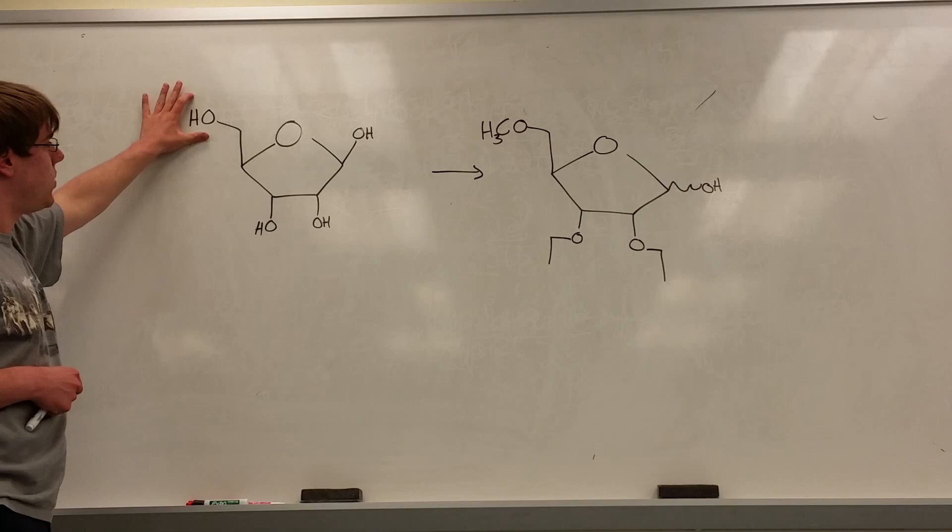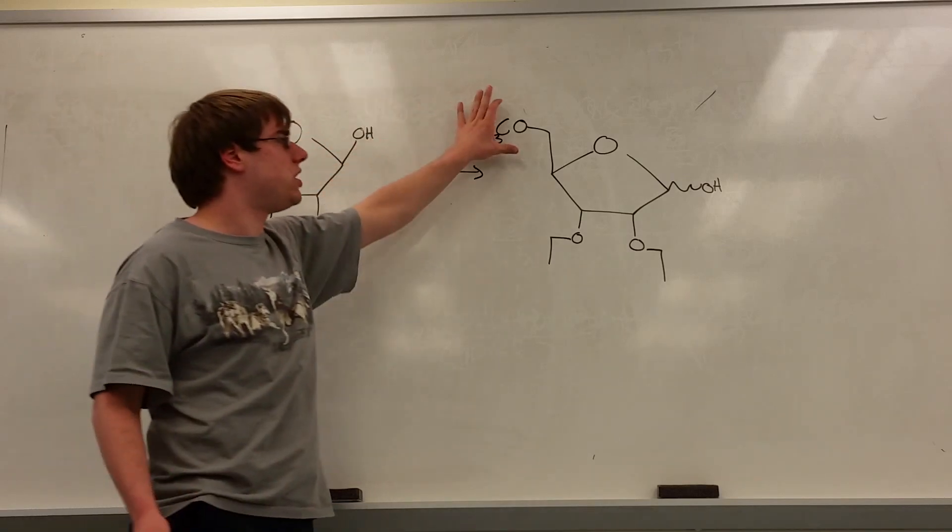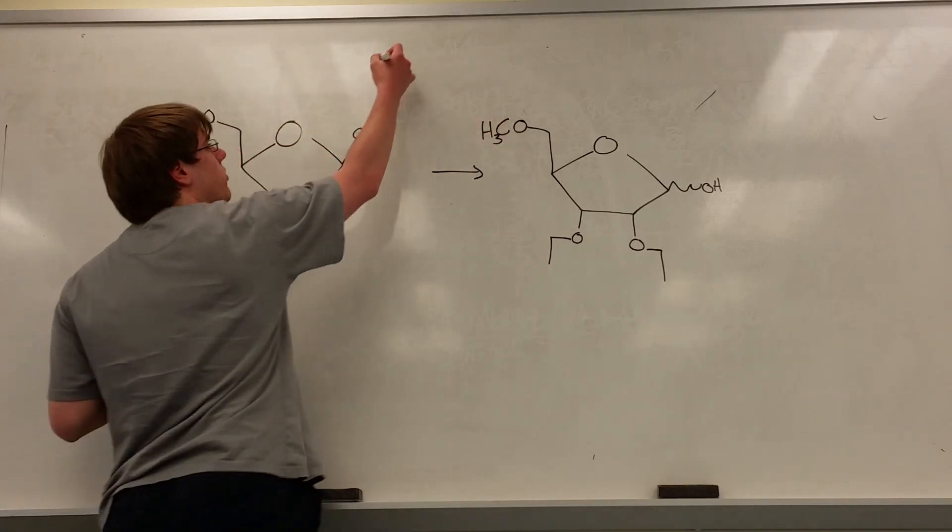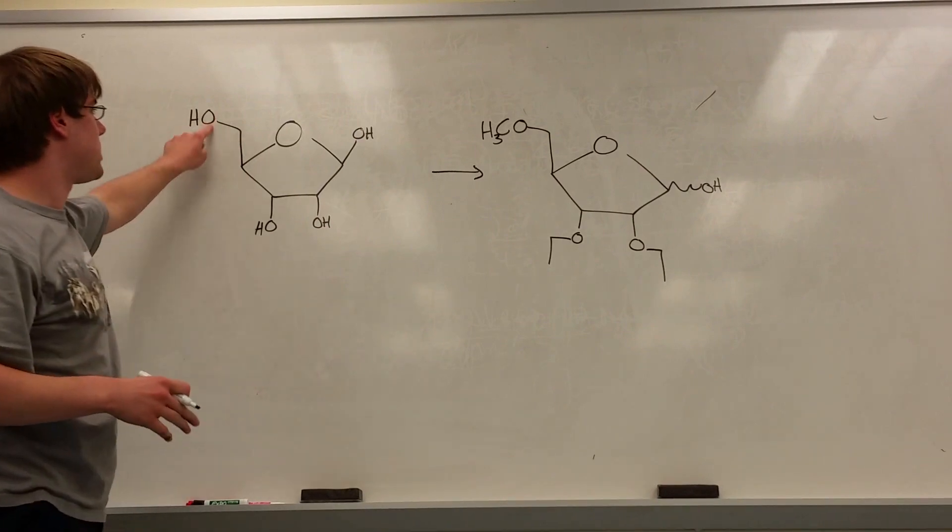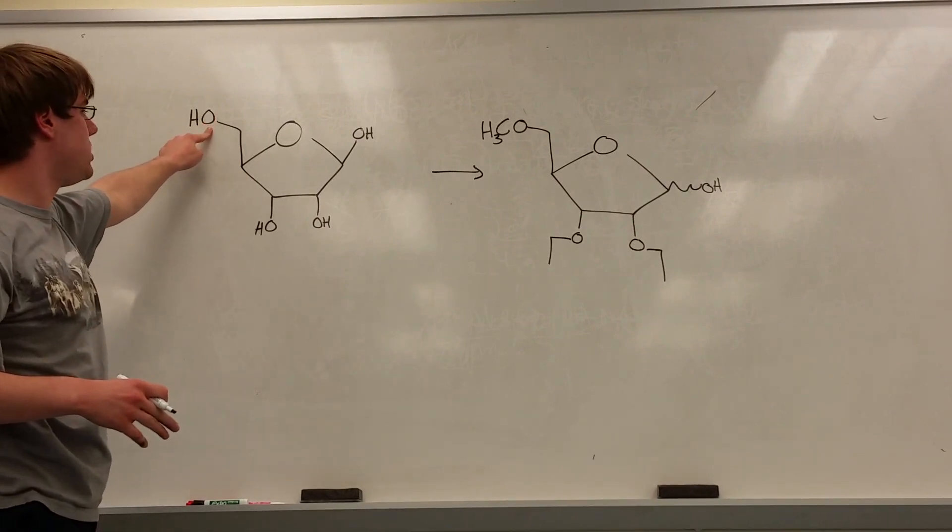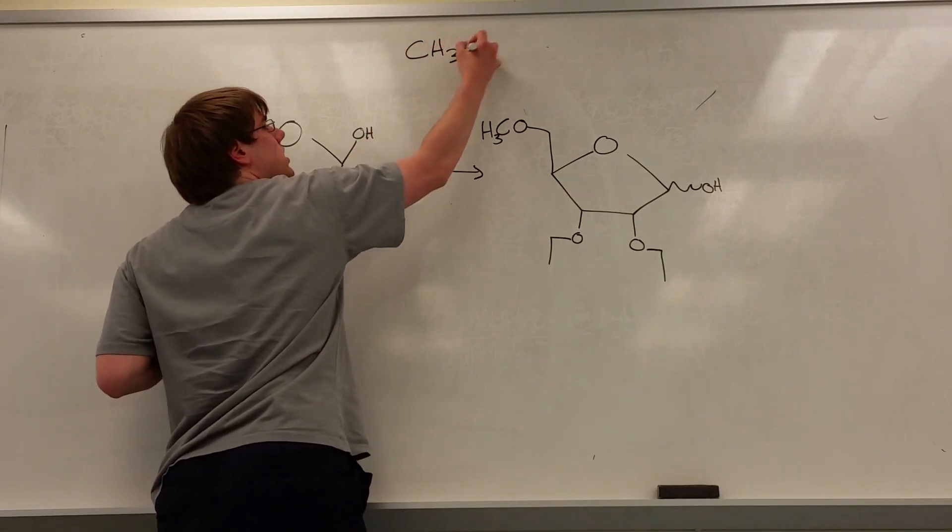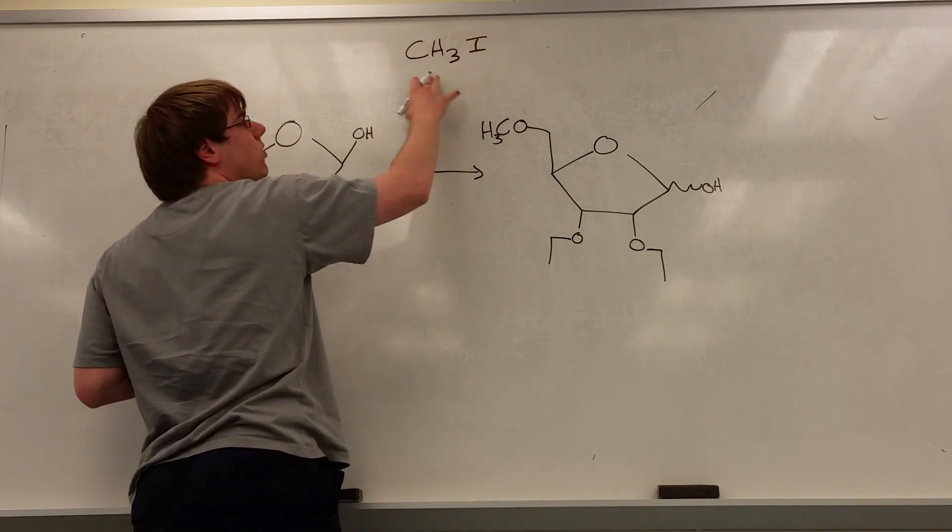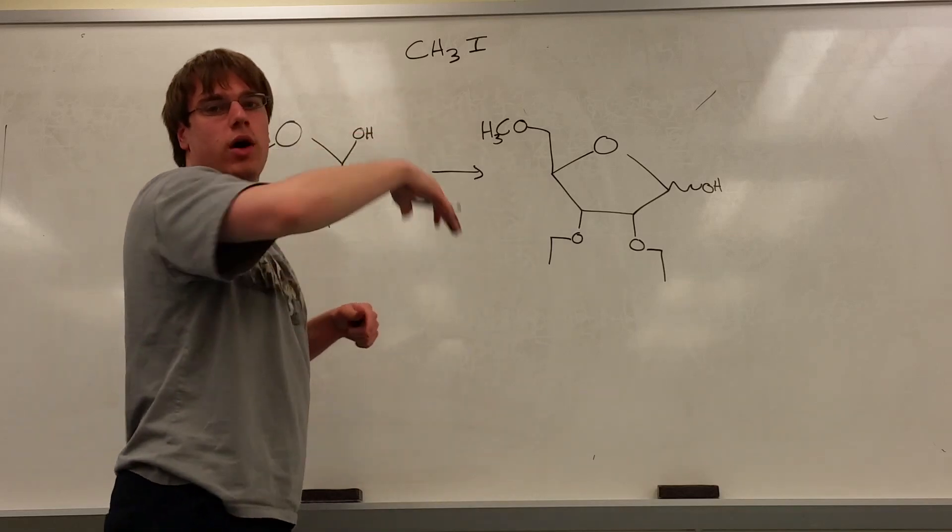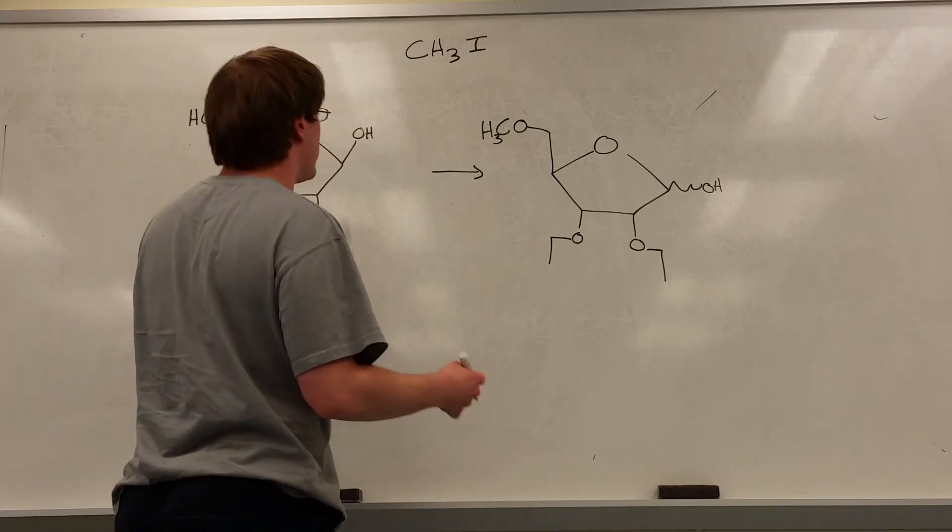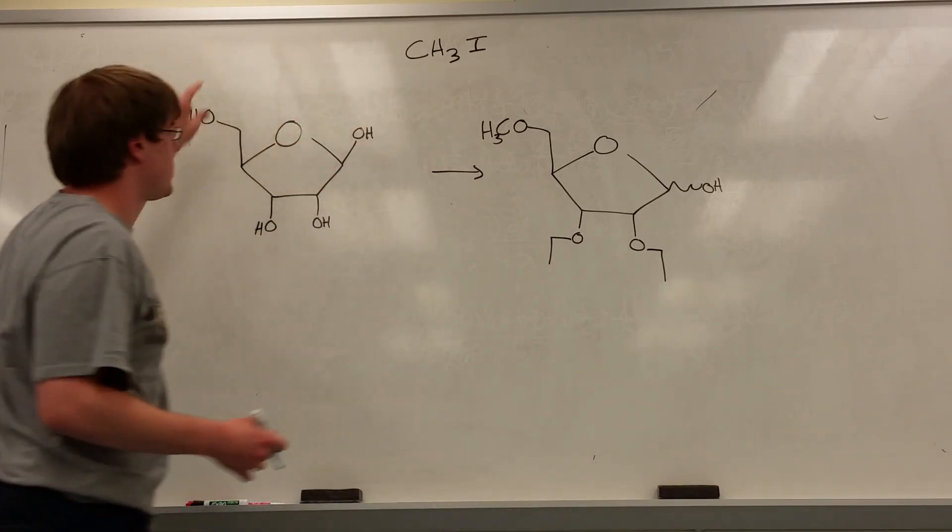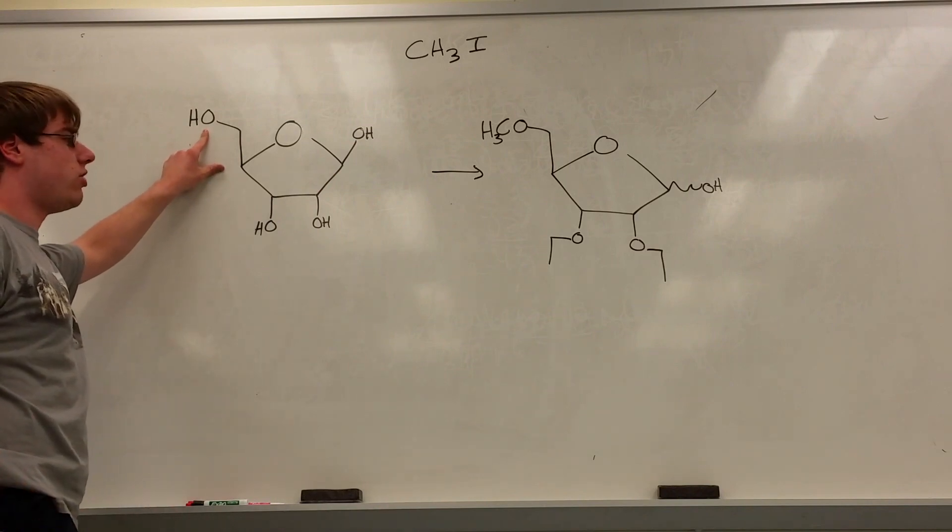I see that this OH over here became an OCH3, and we know the only reactions that get carbons onto these oxygens that aren't your anomeric OHs are CH3I, or some carbon group on an iodine, a good leaving group. So I know I have to use that reaction at some point to get that OCH3 group onto that OH.